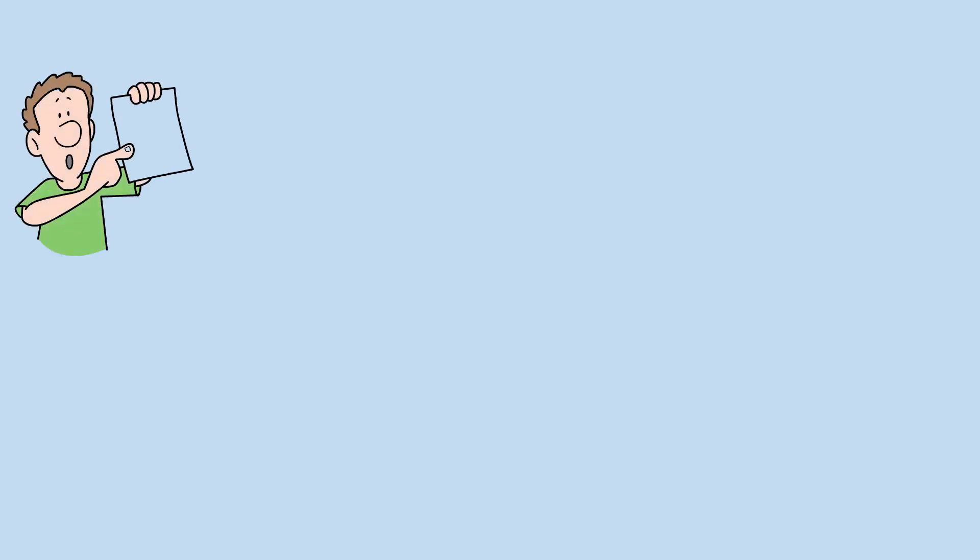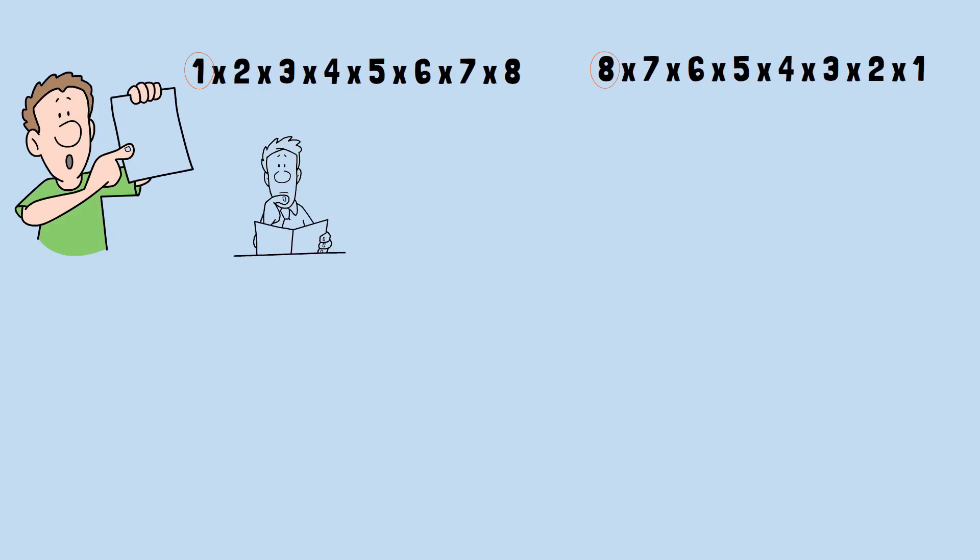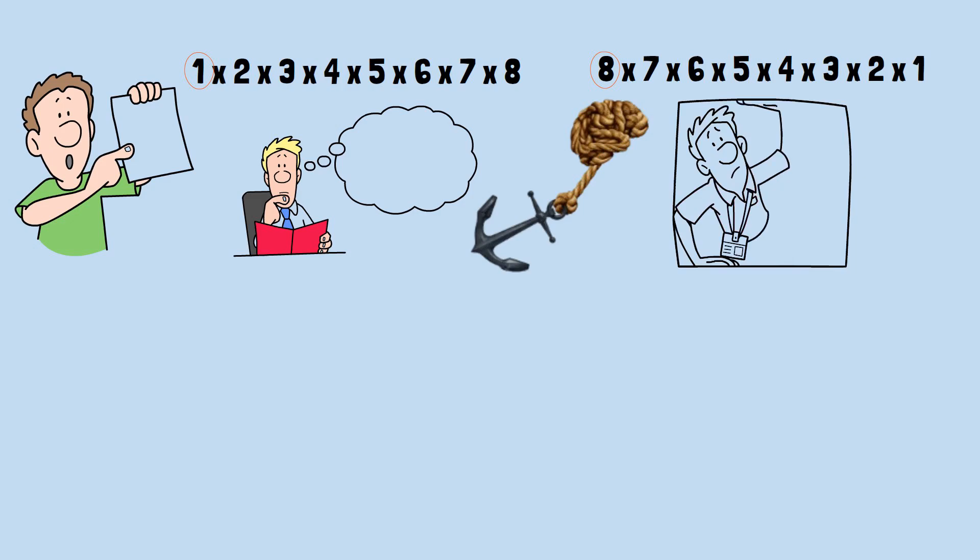Here's what's happening. Whether you started with big numbers or small numbers, you were anchored into a mode of thought that depended on your initial information. Anchoring is a cognitive bias that basically sets the tone for how you think about something, and it can be really tough to break out of it or consider other relevant factors.